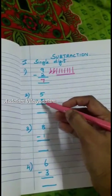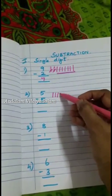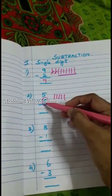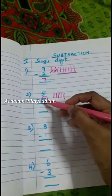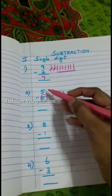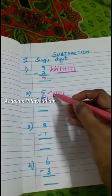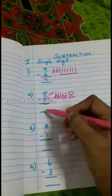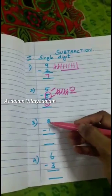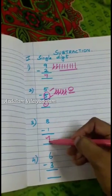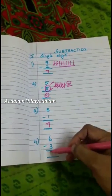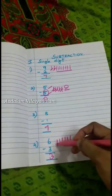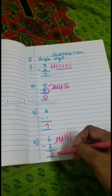Here 5 minus 5: draw 1, 2, 3, 4, 5, then minus 5 — cross out 1, 2, 3, 4, 5. What is left? Zero. So the answer is 0. Then: 8 minus 1 is 7. And 6 minus 3 — draw 1, 2, 3, 4, 5, 6, then minus 3 — cross out 1, 2, 3. So the answer is 3.